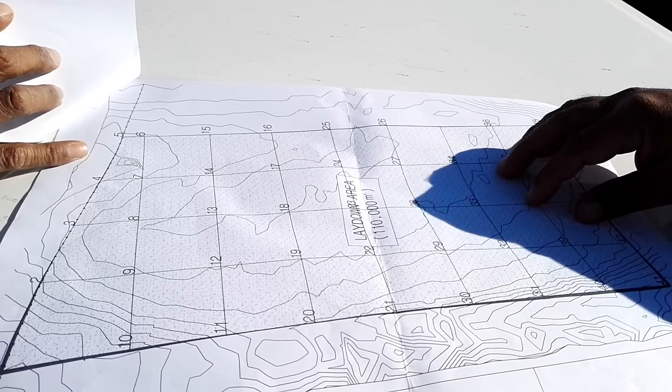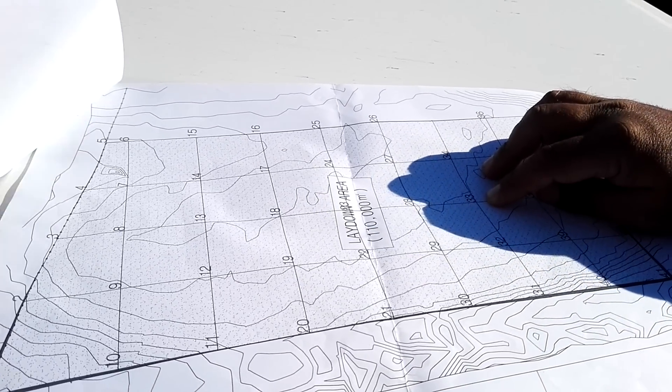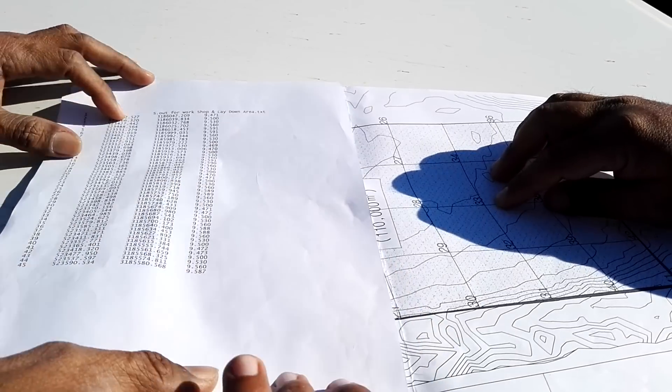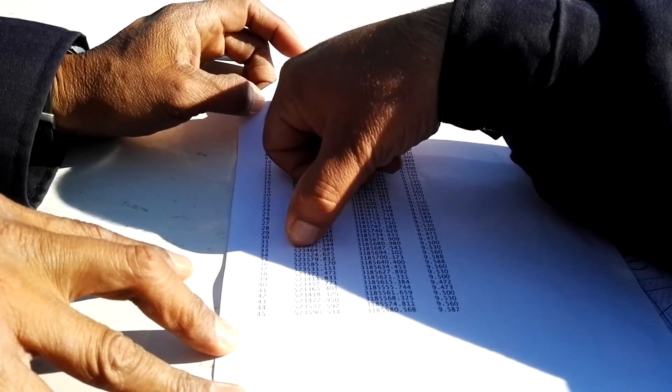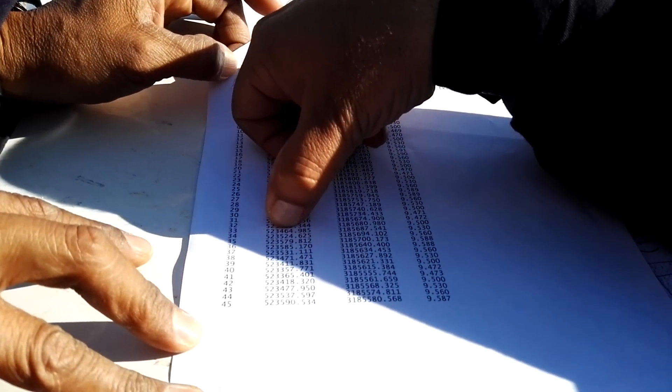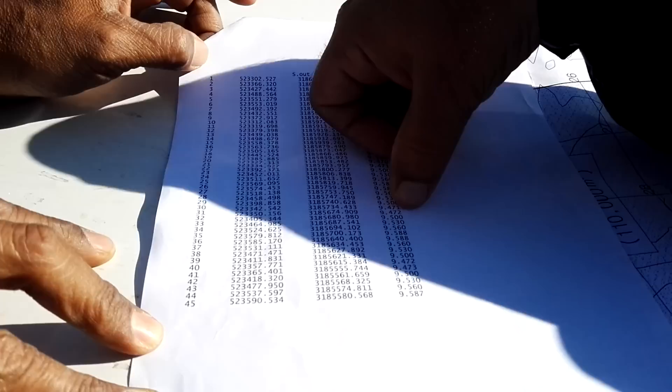So for example, very near to my instrument, I have a point number 33. And this 33, I have three-dimensional coordinates. Like you can see here, this is 33. And here we have east and then north and then the elevation.